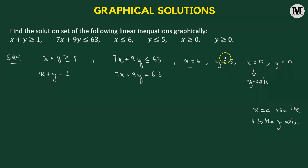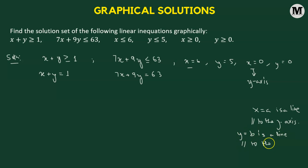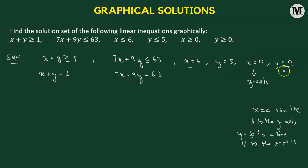Similarly, for y equals to 5 and y equals to 0, we have y equals to B, which is a line parallel to the x-axis. Its y-intercept is given by B. For y equals to 5, the y-intercept is 5, and for y equals to 0, the y-intercept is 0 — in other words, y equals to 0 is simply the x-axis.